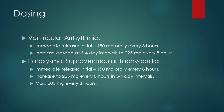For some examples of dosing with Propafanone: in the treatment of ventricular arrhythmia using the immediate release formulation, the initial dose would be 150 milligrams orally every eight hours. The dose can then be increased in three to four day intervals to 225 milligrams every eight hours. In paroxysmal supraventricular tachycardia, again with the immediate release formulation, the initial dose would be the same —